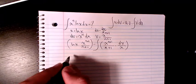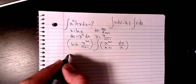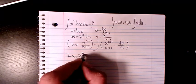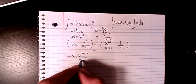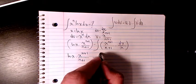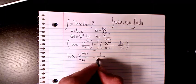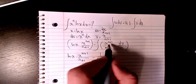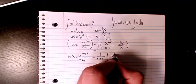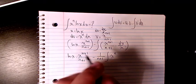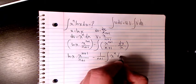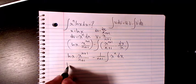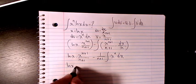Then I simplify it: it will be ln x times x to the power of n plus 1 divided by n plus 1, minus 1 over n plus 1 times the integral of x to the power of n plus 1 divided by x, which simplifies to x to the power of n dx.